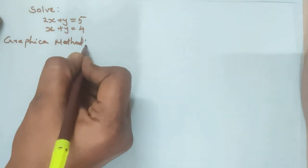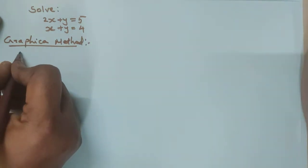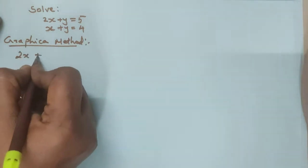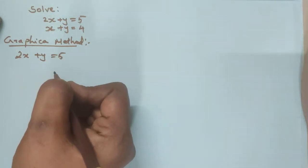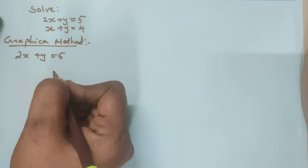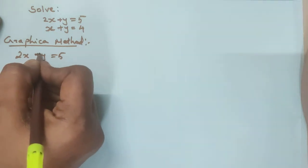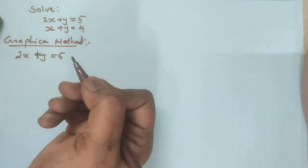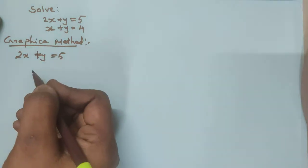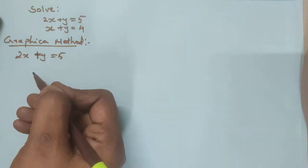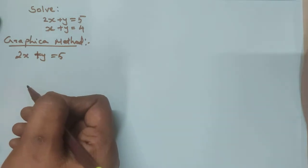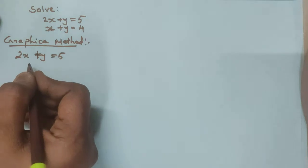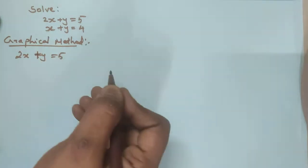To solve by graphical method, first take the first equation: 2x plus y is equal to 5. I am going to explain an easy method which is explained in your textbook. I have already uploaded for CBSE students how to find the value of x and y — the coordinates — in my previous videos. If you want, please check it.